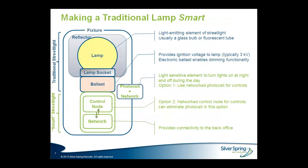Let's take a closer look at how we make a traditional lamp smarter. The traditional bulb has multiple components including the lamp and reflector, the socket, and the ballast — either magnetic or electronic. In the case of a control node communicating with the ballast, an electronic ballast is required. Once communication is established, the traditional lamp becomes smarter, with the ability to control on/off and in some cases the dimming profile. It also provides instant identification and precise notification of outage locations, reducing truck rolls. The photocell option is also available in 3-pin format, and where relevant, 4-pin and 5-pin.